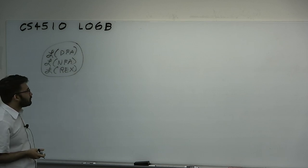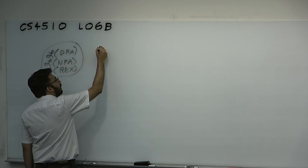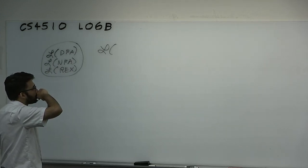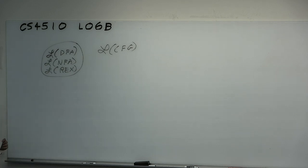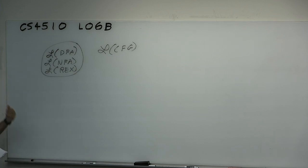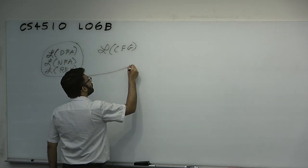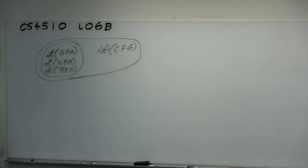We used the pumping lemma to prove that there were some languages which were not regular. Then we were able to show that those languages which were not regular were decidable by context-free grammars. The moral here is that we're trying to build an ideal model of a computer. Since there isn't a DFA for something we can obviously write an algorithm for — like A^n B^n — the DFA is a weak model. So we've tried context-free grammars, and showed that many things DFAs and NFAs couldn't decide, you could build context-free grammars for.